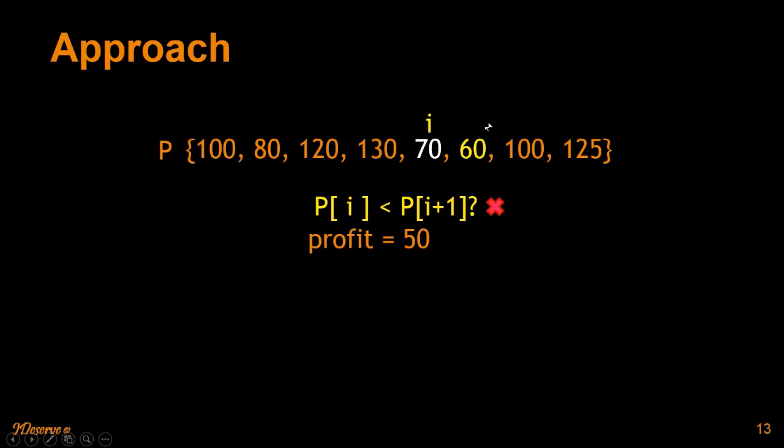So whatever buying price we find after 70 which is lower than 70, we're gonna get higher profit with that. So increasing pairs does make sense and it will give you the maximum profit.